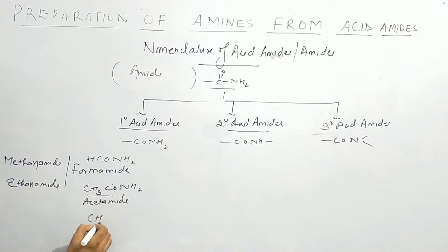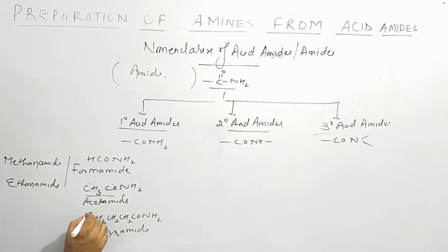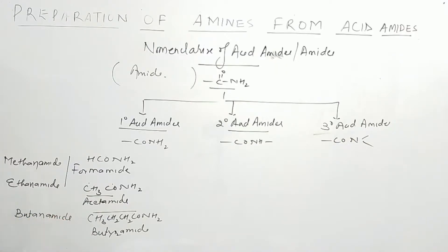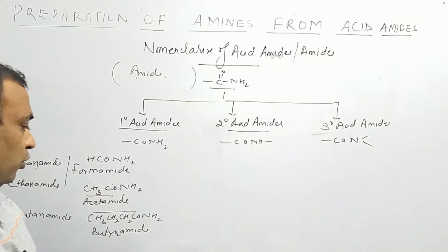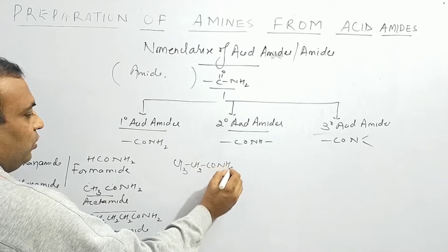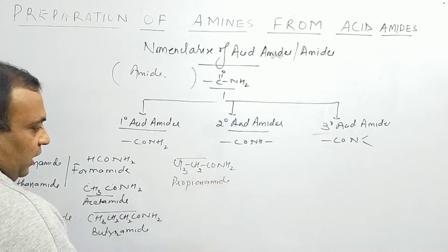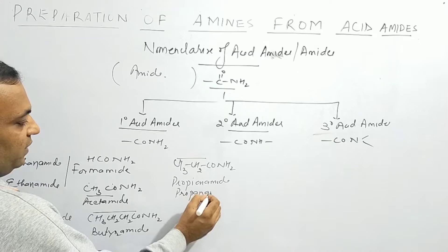If we add a carbon atom: CH3-CH2-CH2-CoNH2 has four carbons — IUPAC name is Butanamide. For three carbons, CH3-CH2-CoNH2, the common name is Propionamide and the IUPAC name is Propanamide.